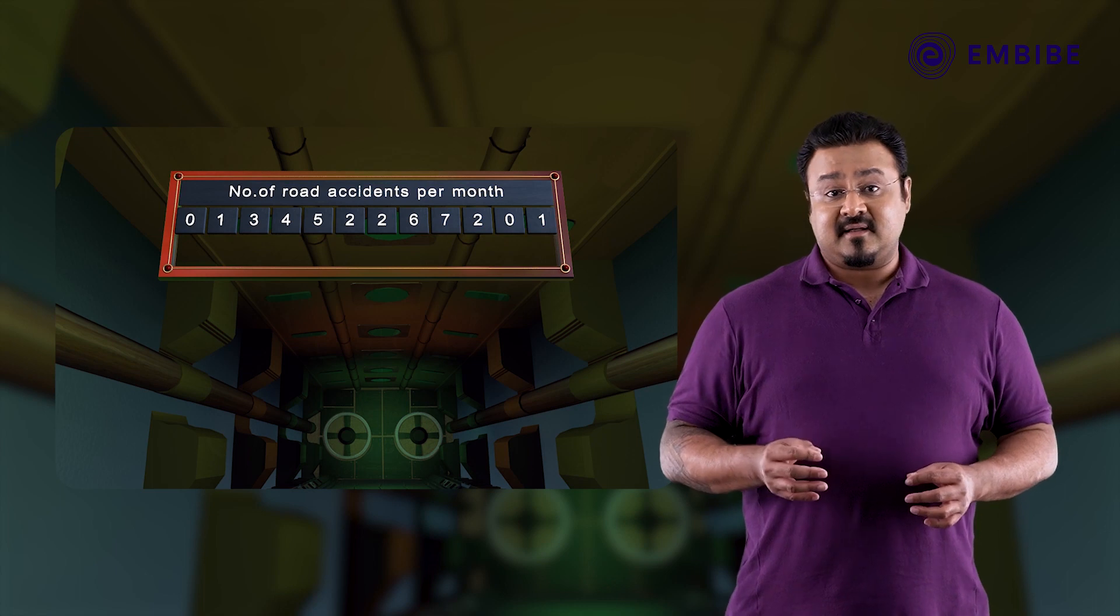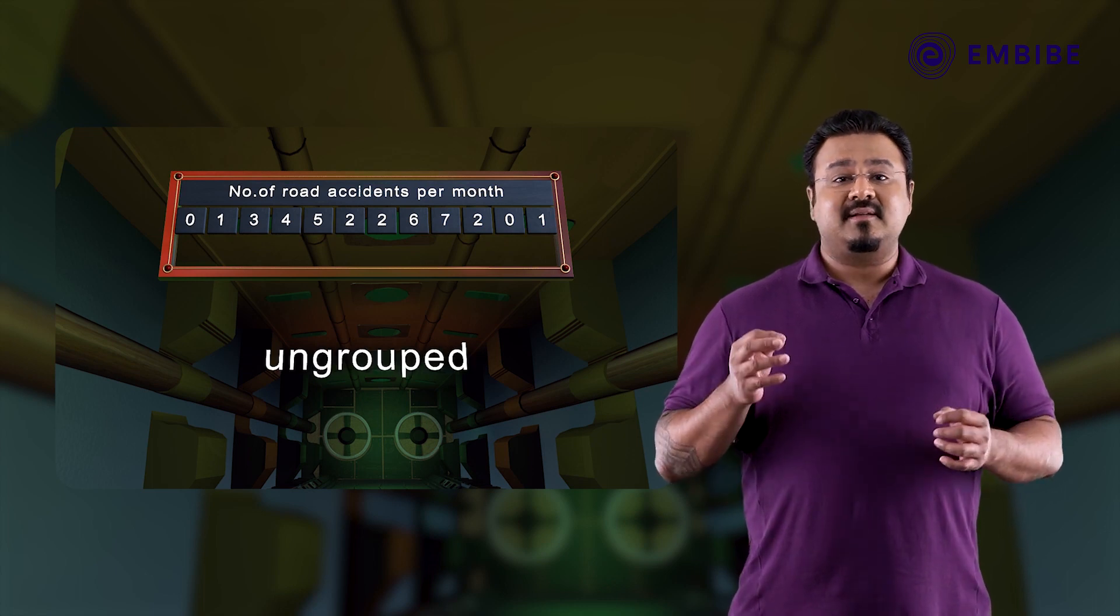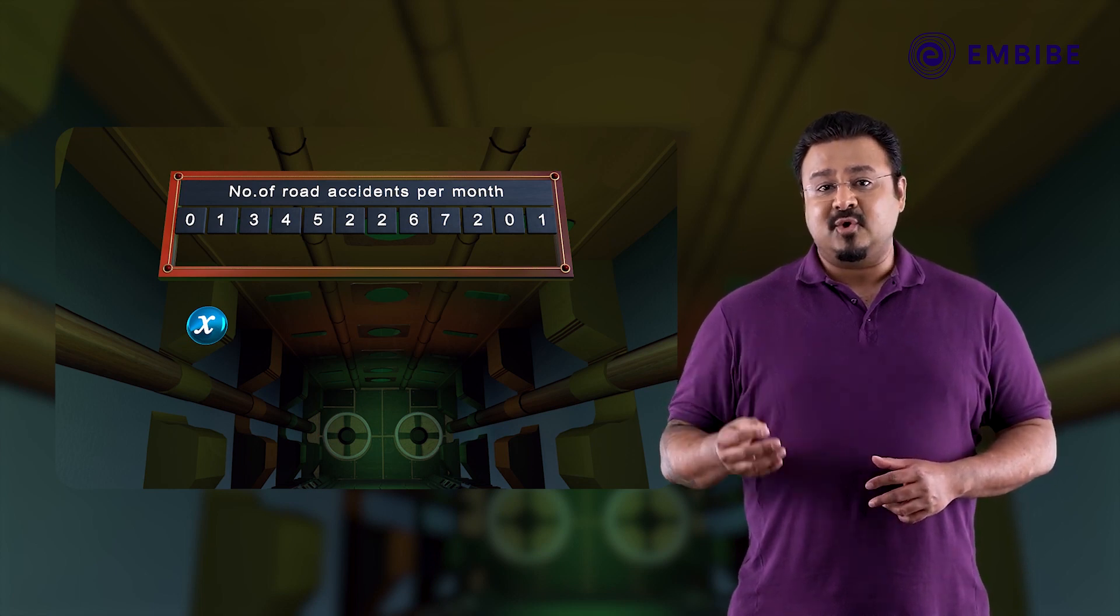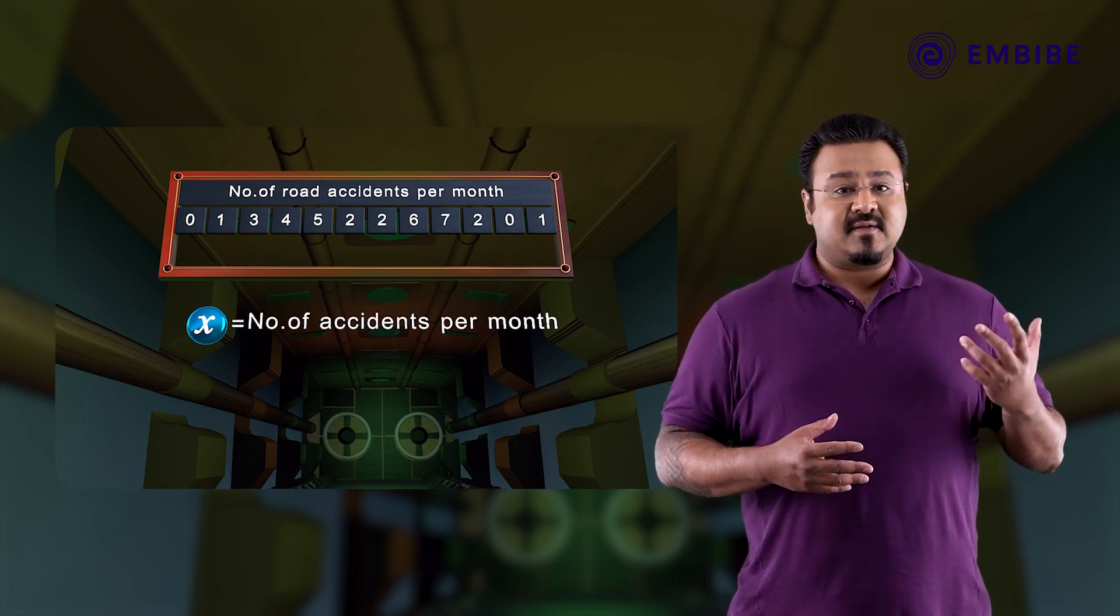The given data are ungrouped and the variable characteristic x associated with the data denotes the number of accidents per month.